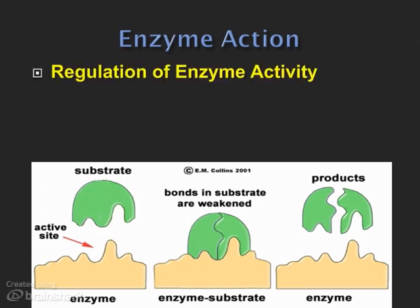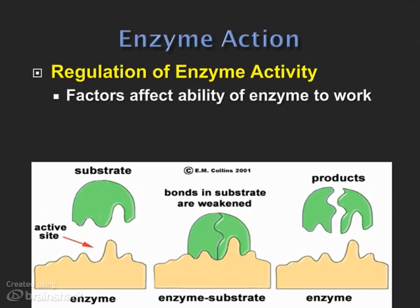Enzymes are essential to controlling chemical reactions in a living organism — we can't live without them. Sometimes reactions would happen so slowly, or at temperatures our body doesn't have, so we need enzymes to get things rolling. Because conditions in any living organism can change at any time, the effectiveness of enzymes is also affected. Two major factors that affect enzyme activity are pH and temperature. When either changes — say when you run a fever, suffer from exposure, or ingest too much of something — you affect the smooth functioning of the chemical reactions in your body.